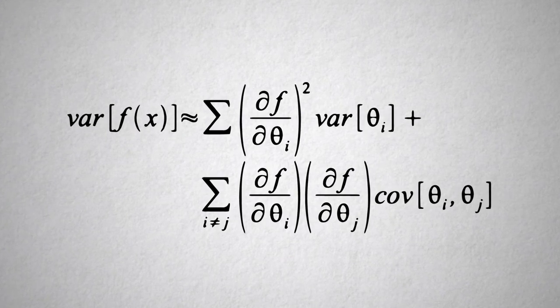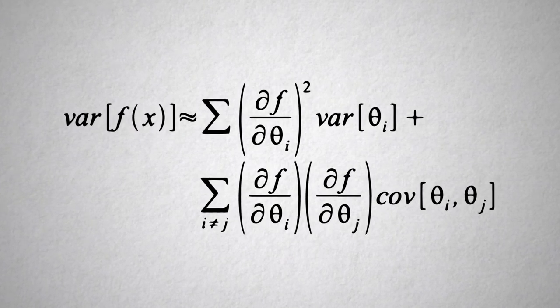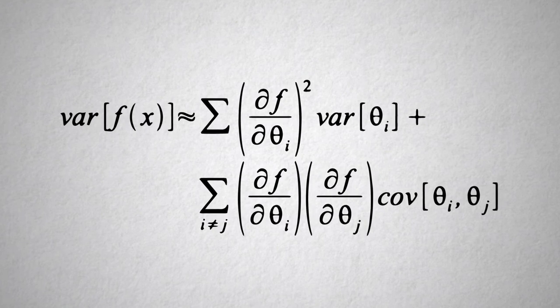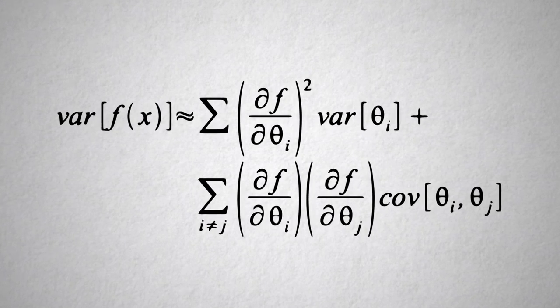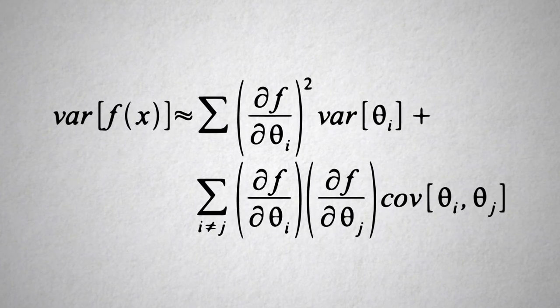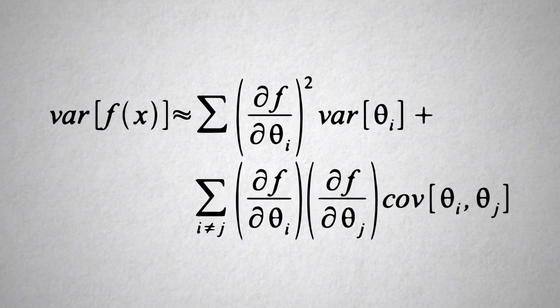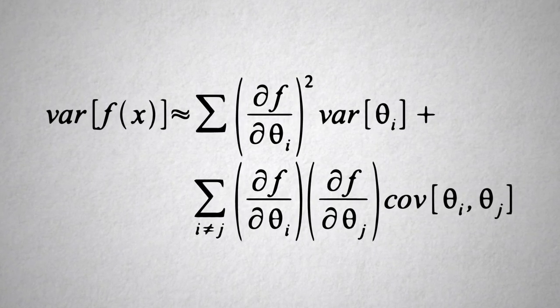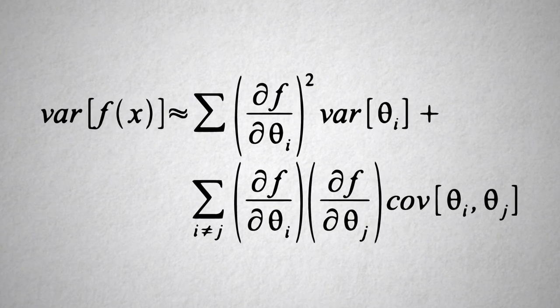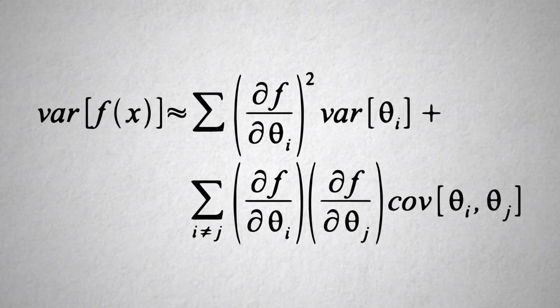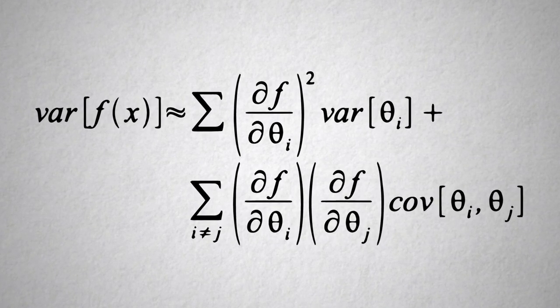So one of the general concepts that we can take home from this is that we can partition out the uncertainties in our forecasts into these two key components: the uncertainties of the inputs and how our outputs respond to those inputs. Essentially, we're decomposing the predictive uncertainty into the sensitivities of our systems and the uncertainties in the inputs. And we'll come back to that concept later when we talk about how we analyze uncertainties to try to improve models.